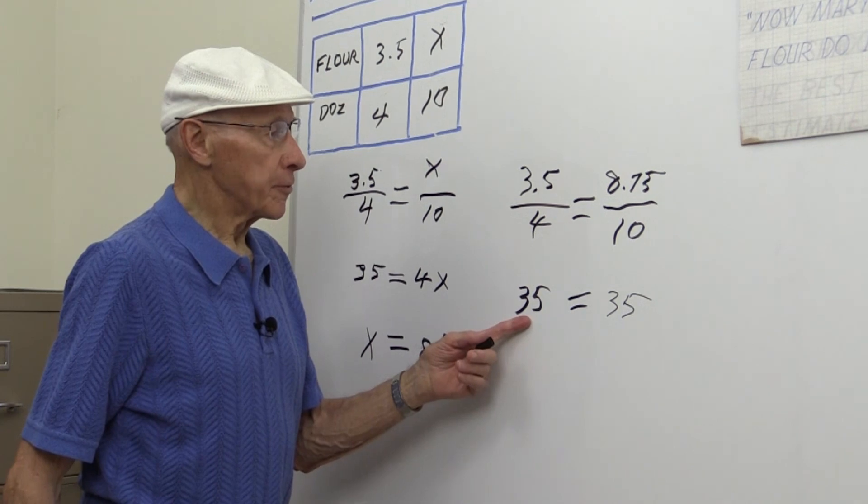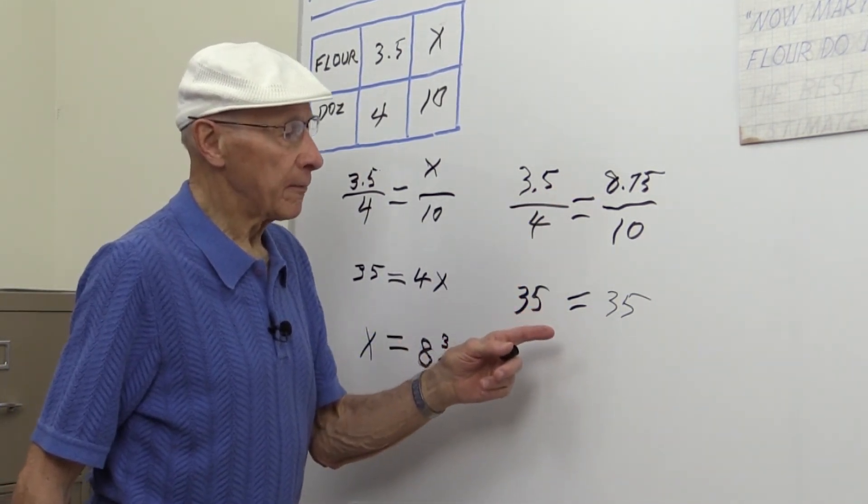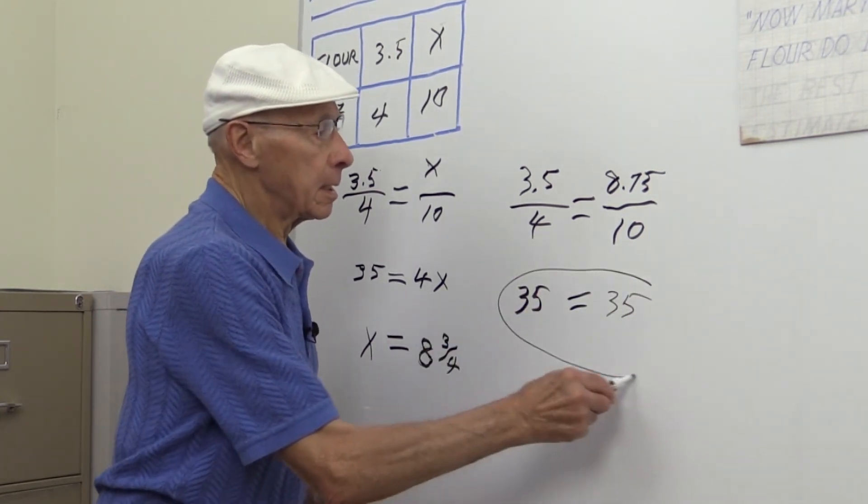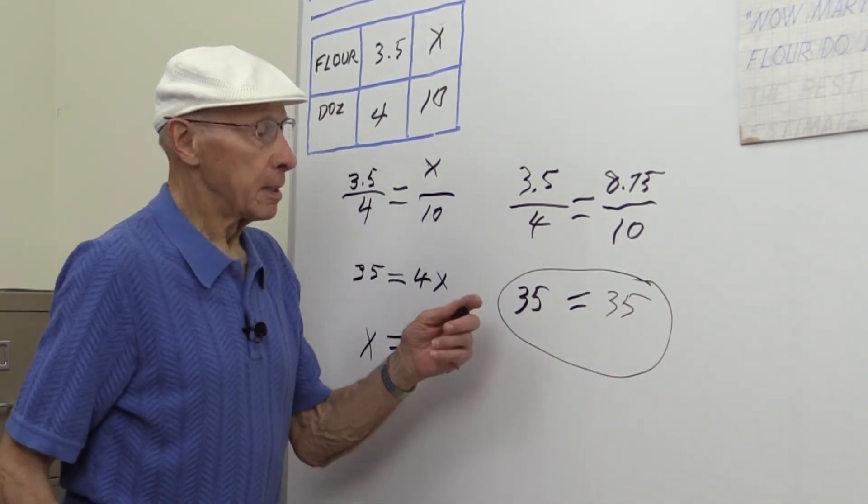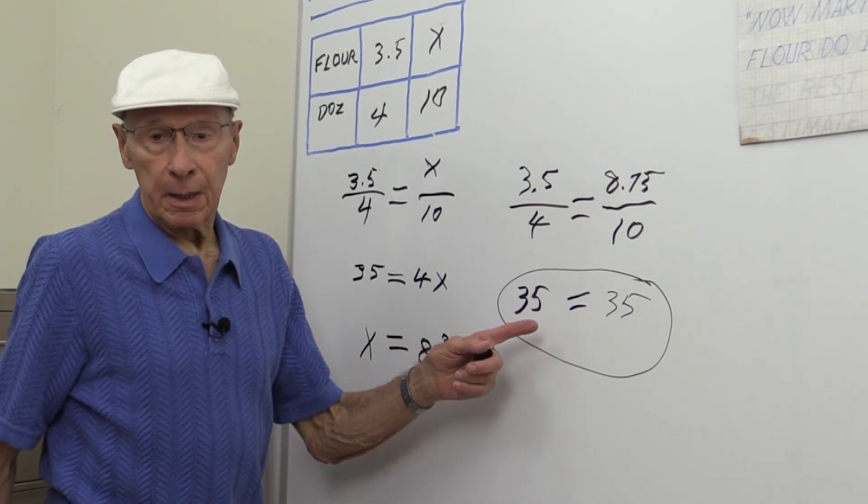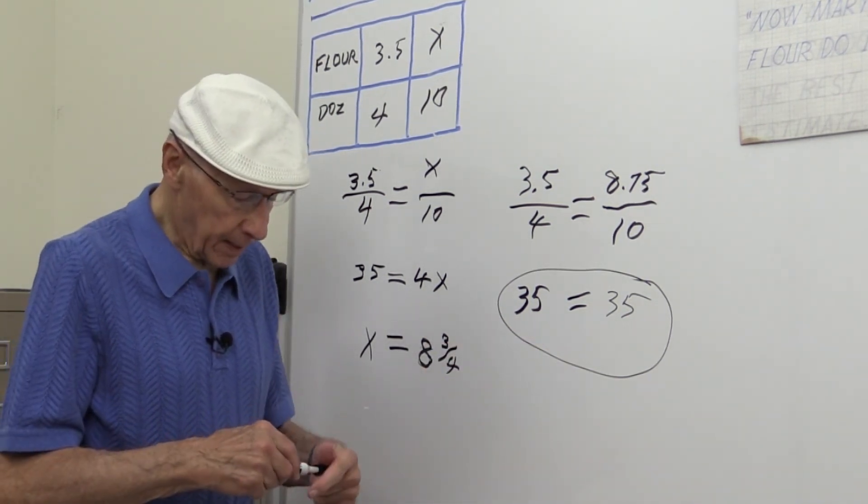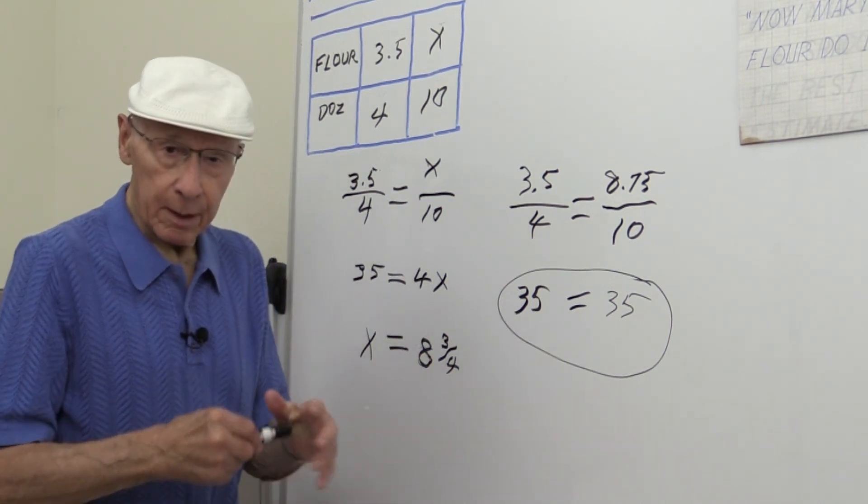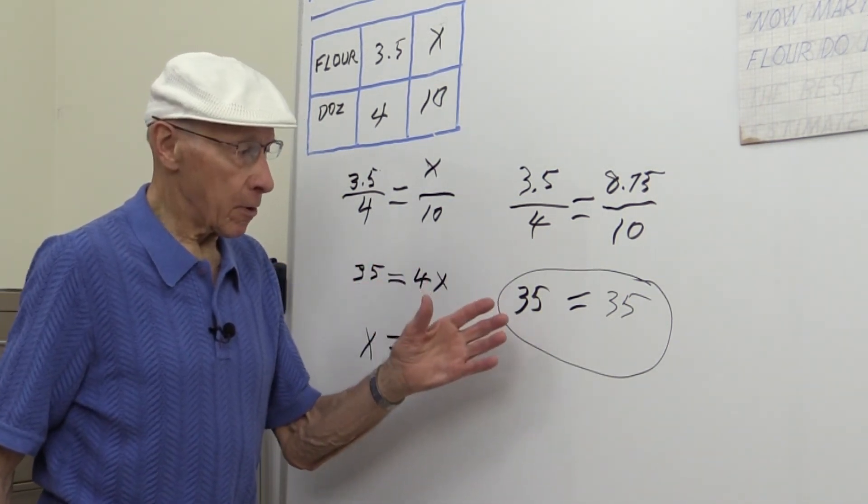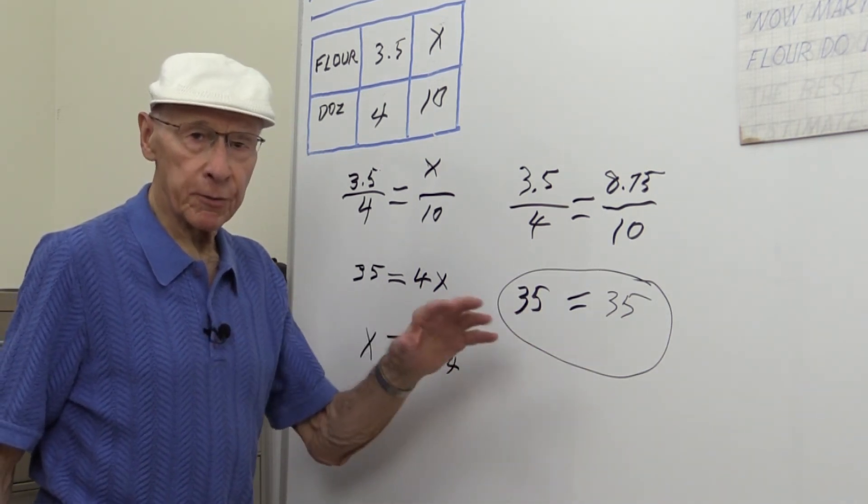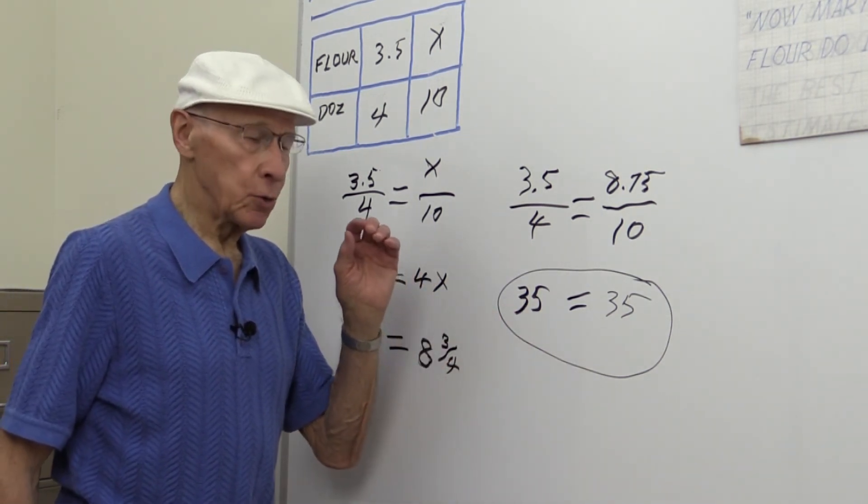4 times 8.75 is 35, so this indeed verifies the answer that we got: 8¾. So in mathematics, a helpful hint which will show up on the helpful hints later on—I'll include this—always, always go through in a math test to do your problems all the way through.